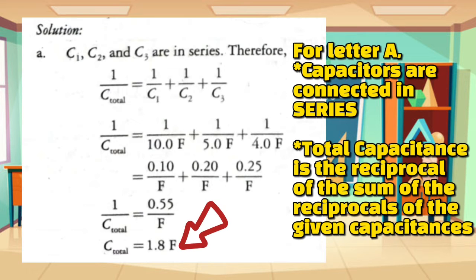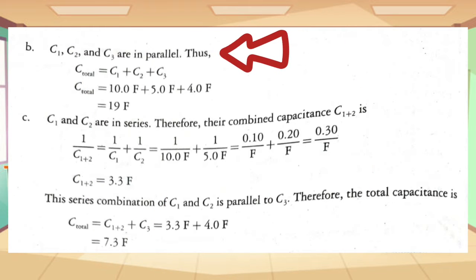Now, for diagram letter B, the capacitors are connected in parallel. Therefore, to get the total capacitance, we just get the sum of the values of the given capacitances. Therefore, we just add 10 farads plus 5 farads plus 4 farads. And that now equals to 19 farads, the total capacitance for diagram letter B.